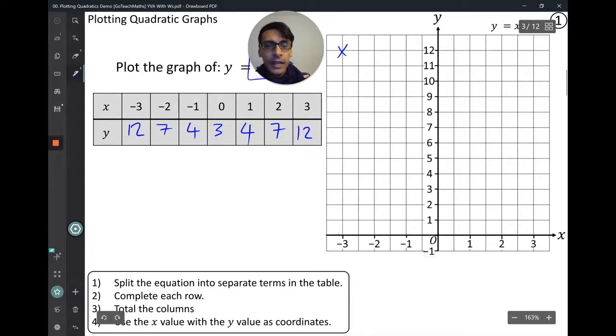So you have to do a clear cross. And then I've got negative 2, 7. So you guys should be following along here. I've got 0, 3. And then I've got 1, 4, which is here. Oh, I've missed one out. So it's got negative 1, 4. I've got 1, 4, 2, 7. And then finally 3, 12. So you can see your shape here.